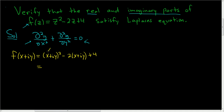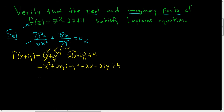Taking a shortcut, we square the first term to get x squared, then multiply the cross terms and double it to get plus 2xy, and squaring the last term using i squared equals negative 1 gives minus y squared. Distributing the 2 gives minus 2x and minus 2iy, and we still have the positive 4.